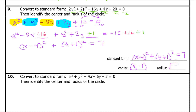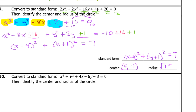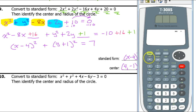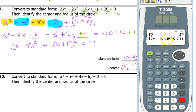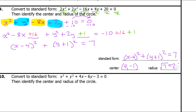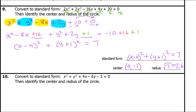From the original general form equation, there's no way to glance at it and identify the center and radius. That's the benefit of converting from general form to standard form. Let's do that one more time with another equation.